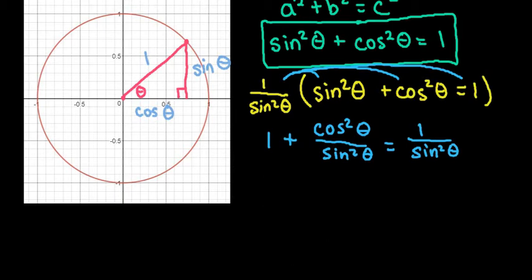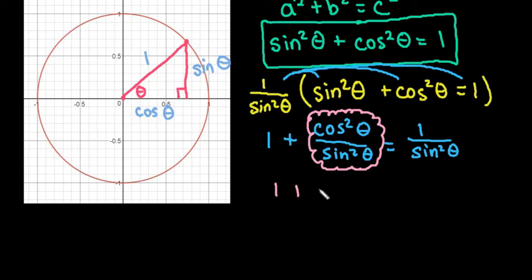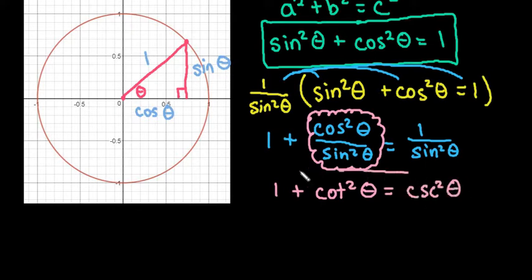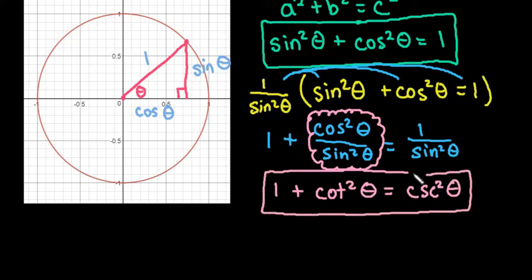Now if we replace this with properties we know — cosine over sine, looking at our picture, is adjacent over opposite, which is cotangent. So we can replace this with 1 plus cotangent squared theta equals 1 over sine squared theta. And remember that the reciprocal function for 1 over sine squared theta is cosecant squared theta. So this is another one of the trig identities. Sometimes it's written as cotangent squared theta plus 1 equals cosecant squared theta, which is the same thing because order of addition doesn't matter.